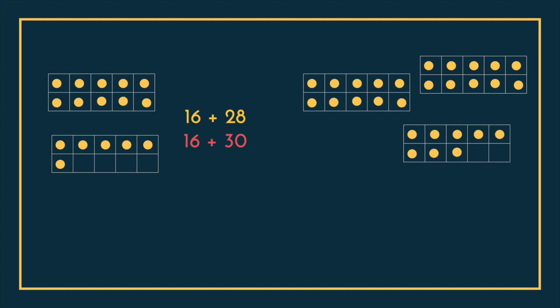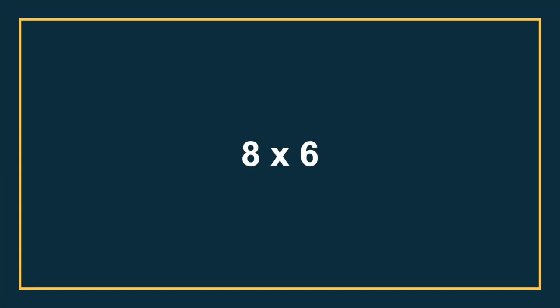Another typical strategy that textbooks try to teach kids is to round one of those numbers to a friendly number — so instead of 16 plus 28, make it 16 plus 30, and then work from there. But a lot of kids get confused with that strategy. Instead, if those visuals are there, some kids might naturally want to add 2 into that other 10 frame to make it full, so they naturally have the 30, and then they understand they need to subtract 2 because they were the ones who added that in — that was their idea to begin with.